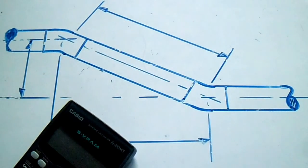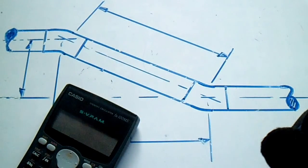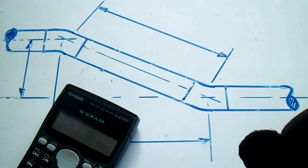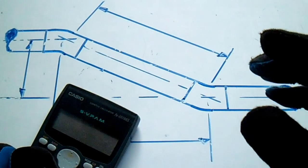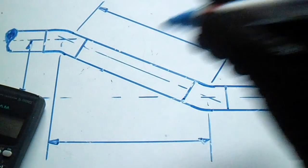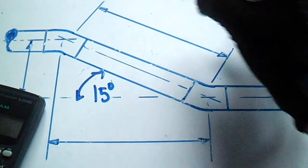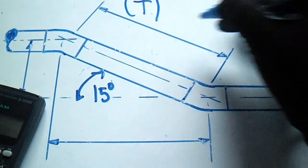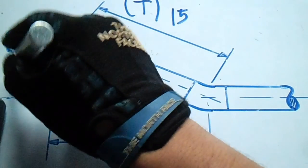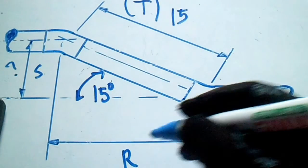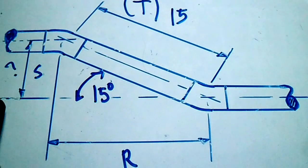Hi guys, welcome to Piping, Welding and DT channel. This video is about how to find the line of sight when the given is an angle. This is easy solving — not a problem solving. We have 15 degrees, and this is travel, which is 15. The question is to find the set and the run. To find that, we have a formula.